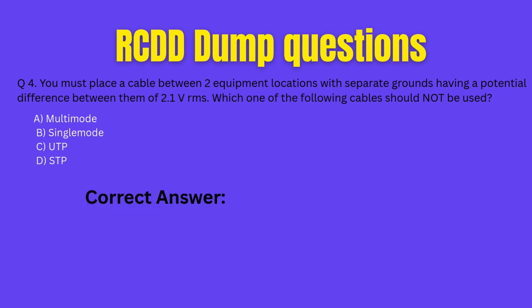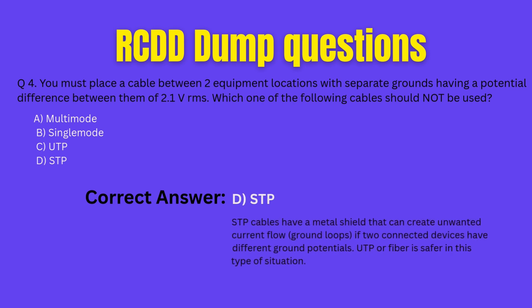Let's see the answer. Correct answer: D. STP. Explanation: STP cables have a metal shield that can create unwanted current flow — ground loops — if two connected devices have different ground potentials. UTP or fiber is safer in this type of situation.